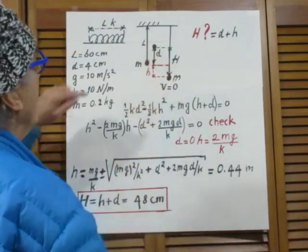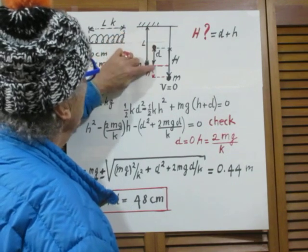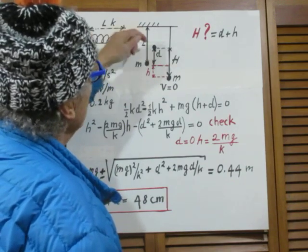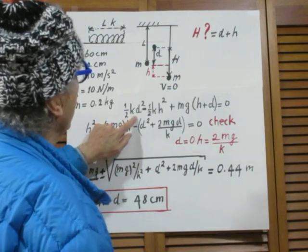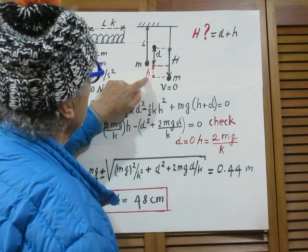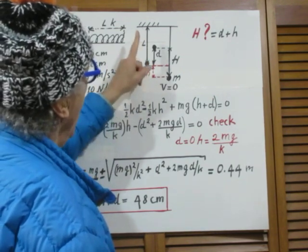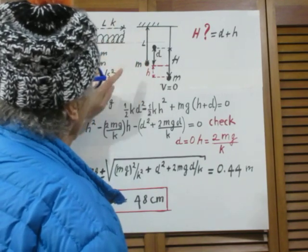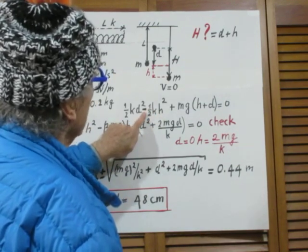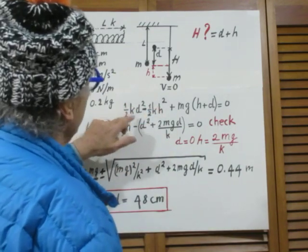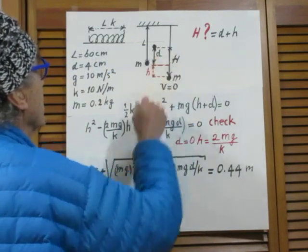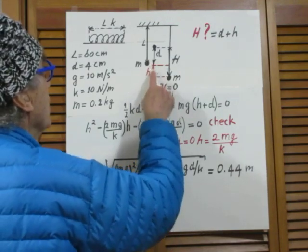What is the work done by the spring force from here to here? Well, the spring force is moving down in the direction that it's moving. So the spring force is doing positive work, one half k d squared. But when the spring goes from here to there, the spring is pushing up and so the spring is doing negative work. And that amount of work is one half k h squared, again, with a minus sign. Remember, it's always one half k x squared. If it does positive work, it's a plus. If it is negative work, it's a minus. So it is plus one half k d squared over this trajectory, minus one half k h squared over this trajectory.